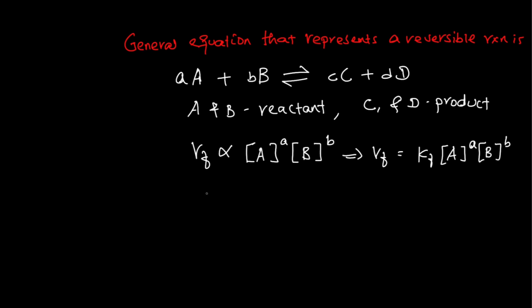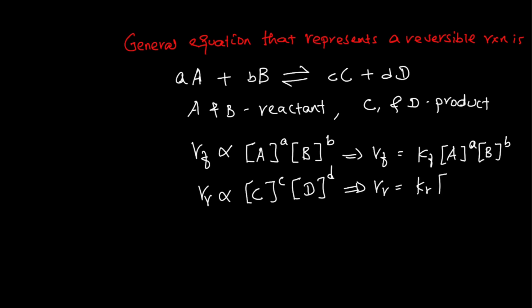Similarly, the rate of reverse reaction is directly proportional to the concentration of C raised to the power of small letter c, times the concentration of D raised to the power of small letter d. The rate of reverse reaction equals the rate constant Kr times the concentration of C to the power of c, times the concentration of D to the power of d.